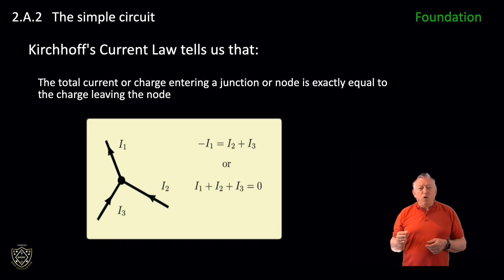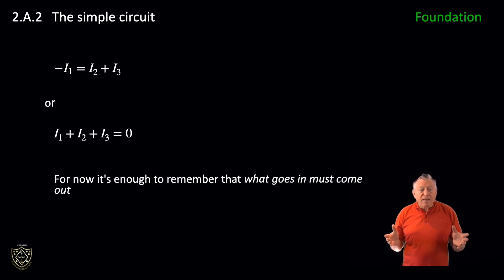But with respect to the node, water tank, the direction is opposite. It's leaving the node, so the sign of I1 is negative. At full licence level, we might like to write this formally as minus I1 equals I2 plus I3, or rearranging I1 plus I2 plus I3 equals zero. But for now, it's enough to remember that what goes in must come out.